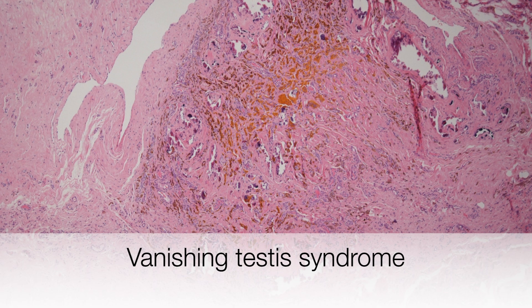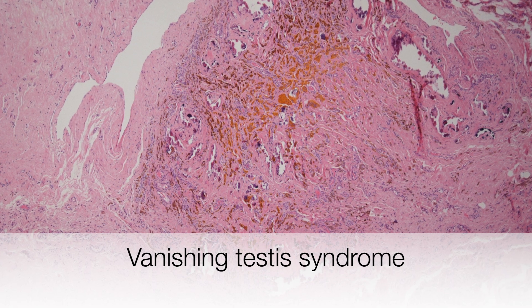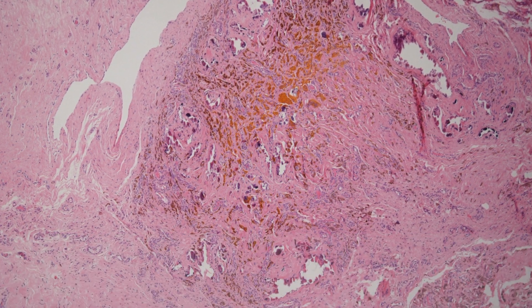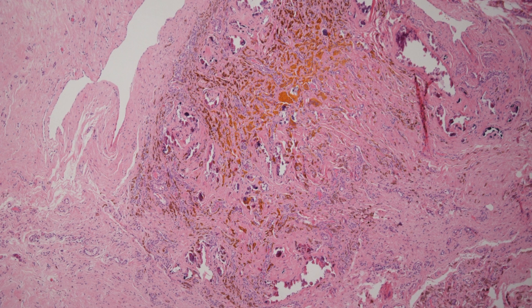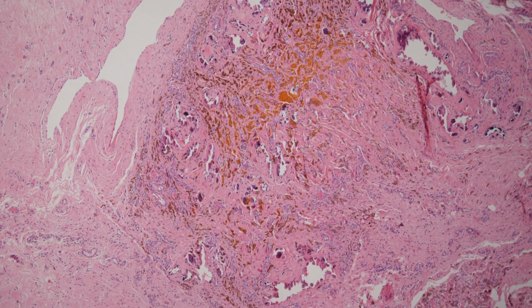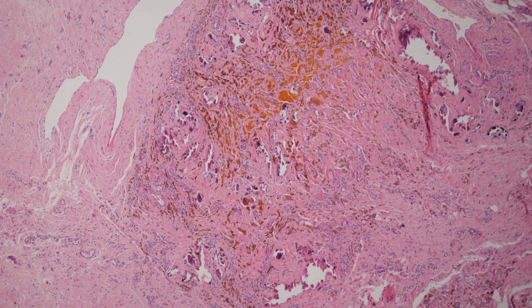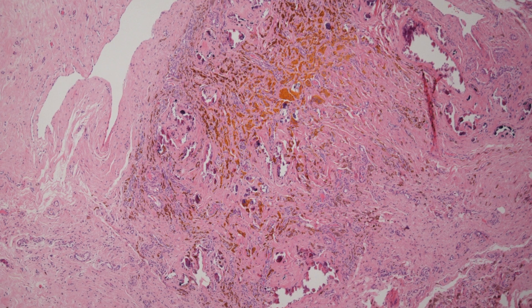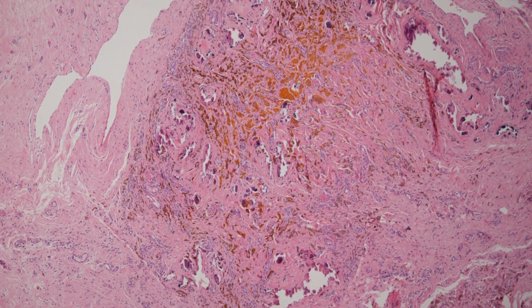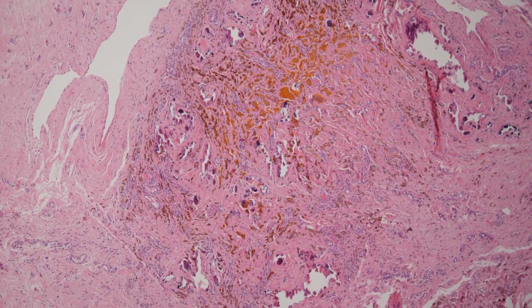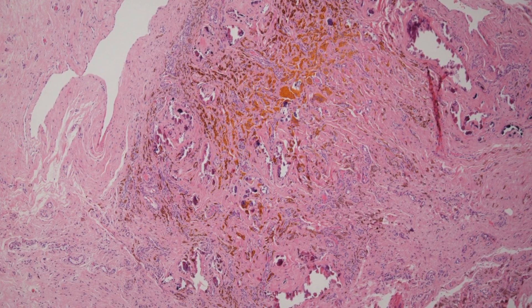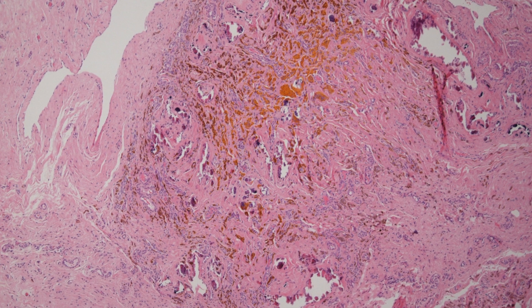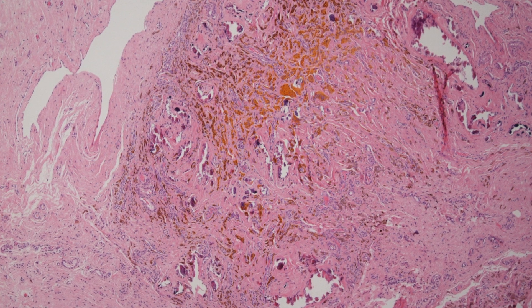This is vanishing testis syndrome, where some insult to the testis occurred during development resulting in atrophy and eventual loss of testicular structures, where all that remains are haemosiderin deposits, foci of calcification and a fibrous nubbin.